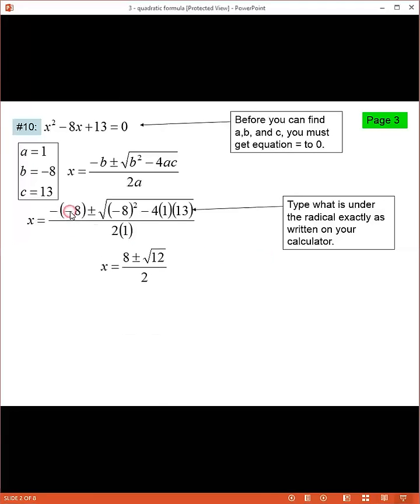So now negative negative 8 would give us positive 8. We calculated what was underneath the square root, that gave us 12, and then I've got 2 on the bottom. And these would be my solutions: 8 plus square root of 12 divided by 2, and 8 minus square root of 12 divided by 2.